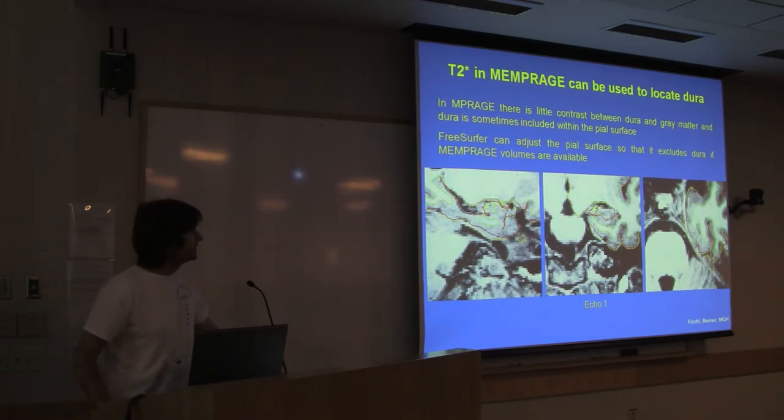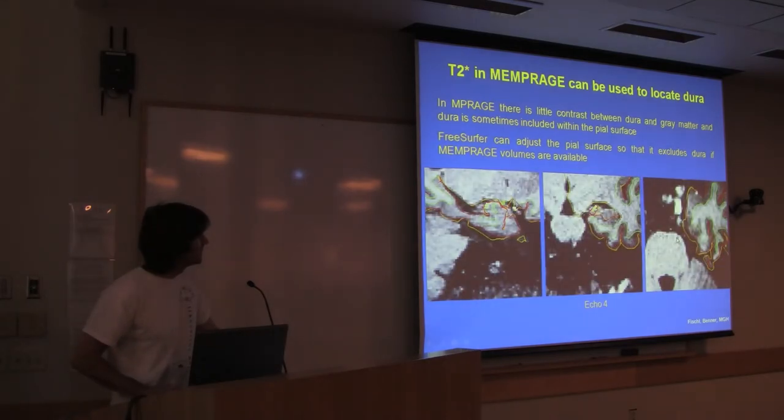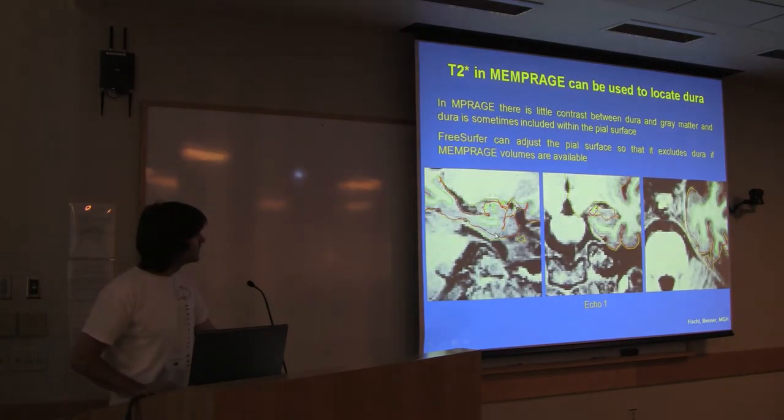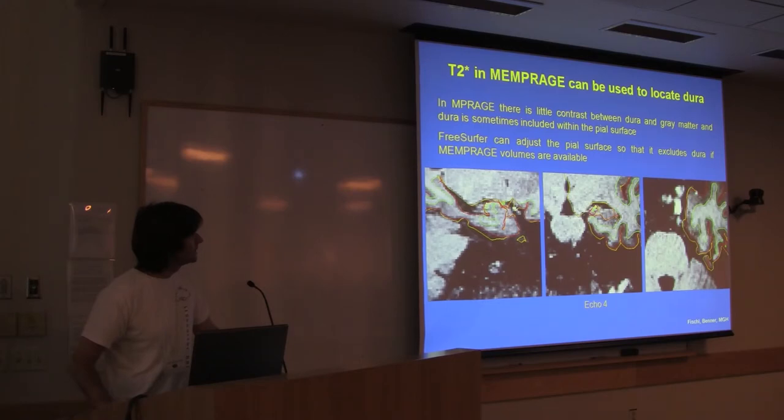So, another interesting thing with multi-echo MPRAGE is that you can separate dura from cortex. So, here is a bit of dura. It's not obvious that it's dura, because it has the same brightness as the adjacent cortex. It's a little more obvious here, because of the geometry. There's a piece of dura. FreeSurfer, like in this yellow surface, has included the dura and the cortex, and that's got the thickness wrong here. If we go to the fourth echo of the MPRAGE, this echo is much more T2 star-weighted. Dura has a shorter T2 star than cortex, so dura has almost disappeared there, whereas cortex also got darker, but it didn't disappear completely. So we can use the combination of the first and the fourth echo to distinguish dura from cortex.